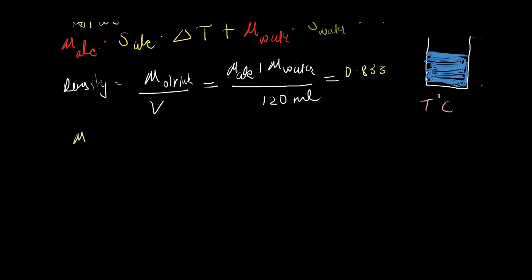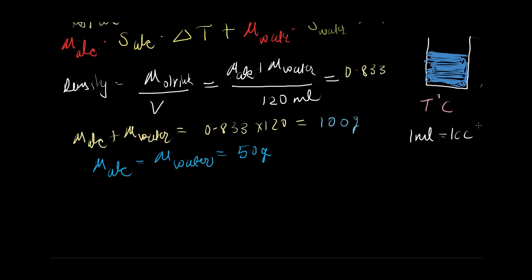So if you solve this equation, you'll get mass of alcohol plus the mass of water is equal to 0.833 times 120, and keep in mind that one milliliter is one cubic centimeter. So if you calculate this, this comes out approximately 100 grams. So this is the case and they also told us that the mass of alcohol is equal to mass of water. So from here we get that mass of alcohol is equal to mass of water equal to 50 grams.